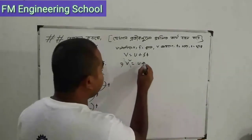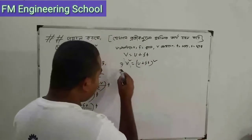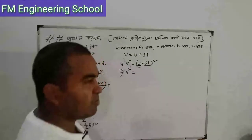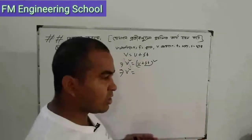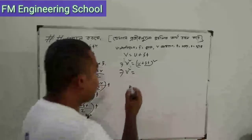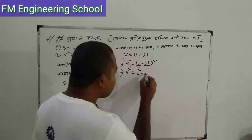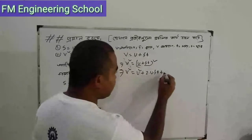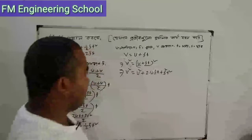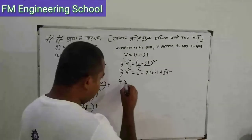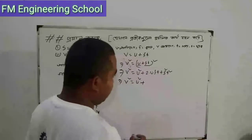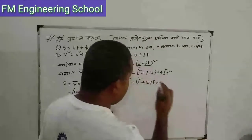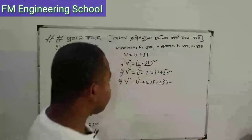We have a square plus u plus aT, a square. Now, the second part of the square is (a plus b) squared, so we have a square plus 2ab plus b square. So we have a square plus 2a. So we have 2uFt plus Ft squared. So we have a square plus 2uFt. We have a square plus 2uFt plus F squared t squared.